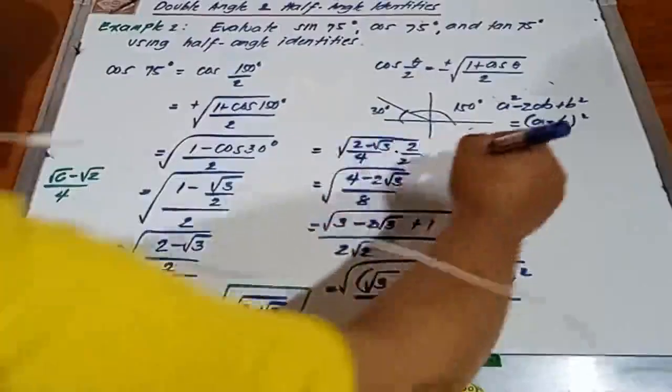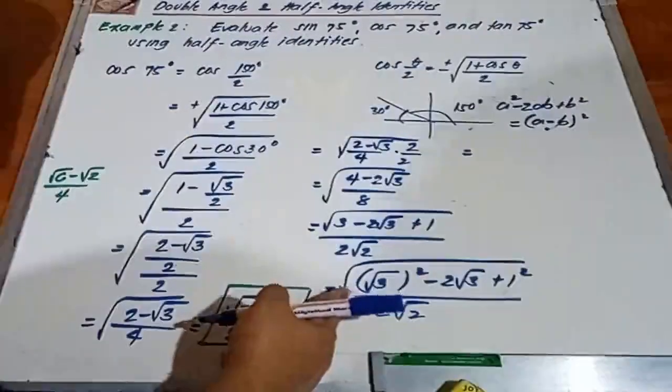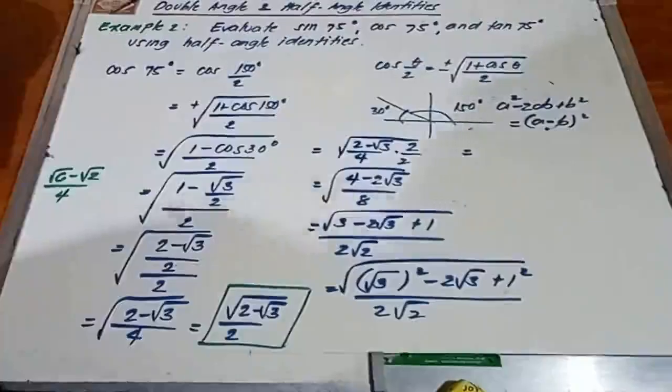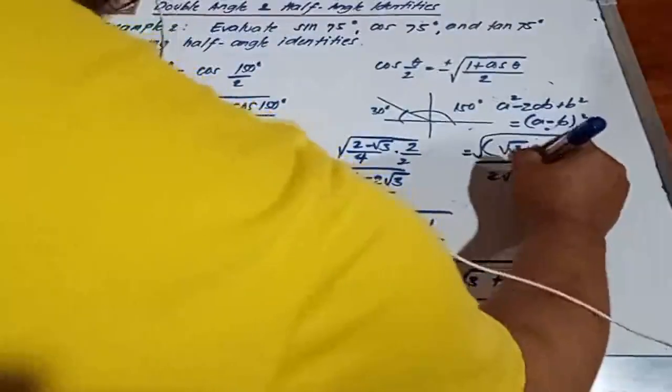Ayan. Next, pwede natin itong i-rewrite sa ganitong format. So we have square root of 3 minus 1 squared. Sa baba, 2 square root of 2.